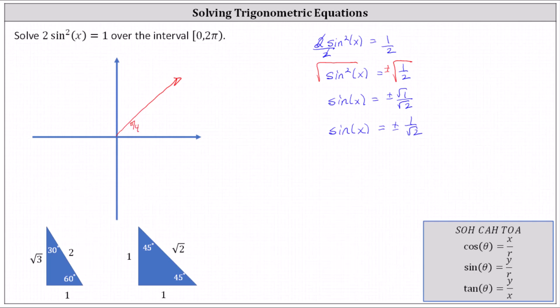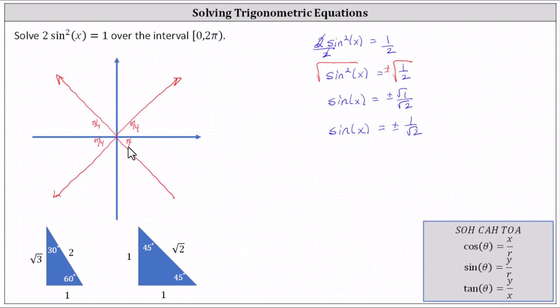There's the reference angle in the first quadrant, the second quadrant, the third quadrant, and the fourth quadrant. Remember, the sine function value is positive where y is positive. Sine is positive in the first and second quadrants, and negative in the third and fourth quadrants.